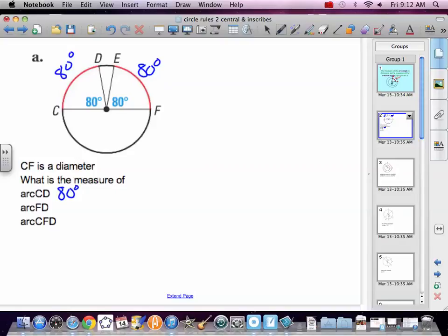Arc FD. F to D is going to be 80 plus a little bit more. How much more? Well CF is a diameter. That's 180 degrees from F to C. So if it's 180 and there's 80 of it, that means the rest is 100. Which also means that this little part in here is 20 degrees.